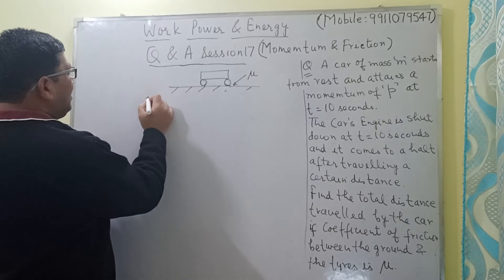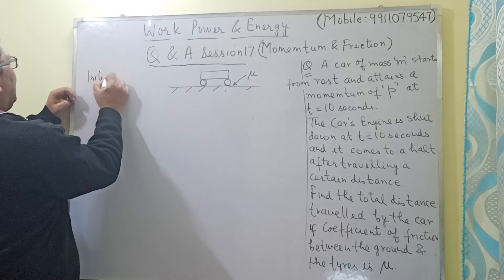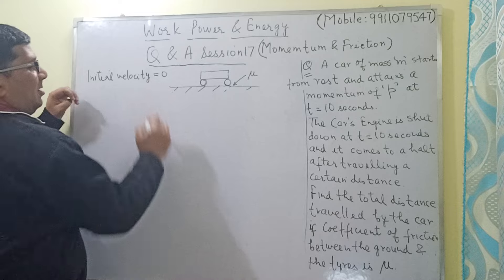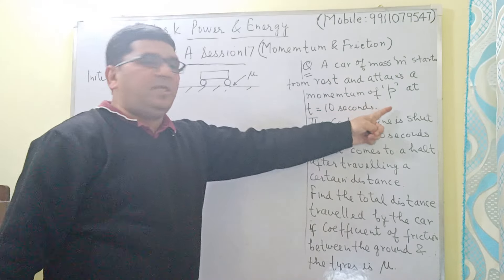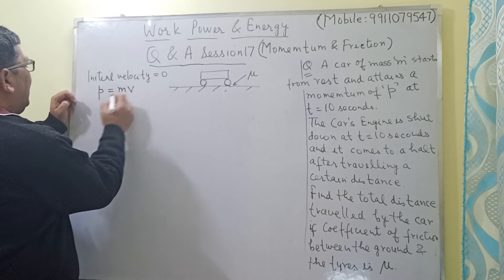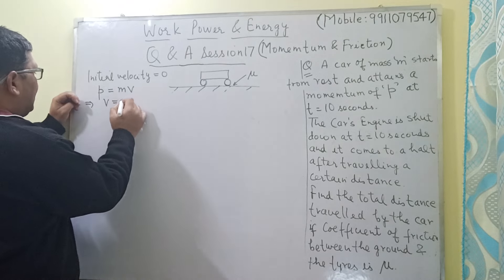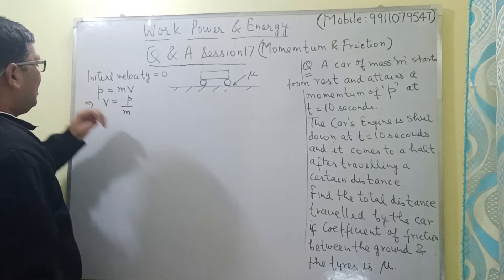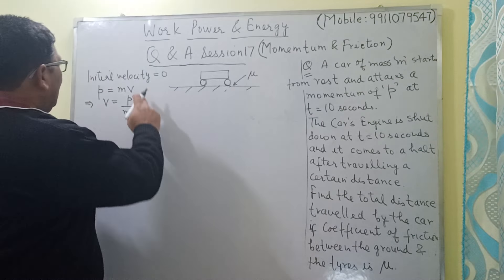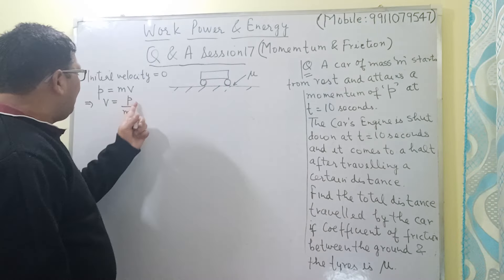The car starts from rest, so the initial velocity is equal to 0. The car attains a momentum of P at t equal to 10 seconds. So at t equal to 10 seconds, momentum is P which equals M into V. This implies that the velocity of the car at t equal to 10 seconds is P divided by M. So in the first part of this journey, the initial velocity is 0 and the final velocity is P by M.